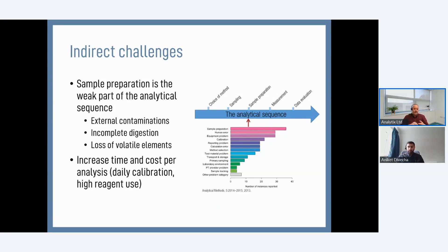The sample preparation step is really the weak part of this sequence. Anyone who's prepared samples this way knows you can have issues with hot plates, hot blocks, and microwaves — if the sample is open to the environment or you have a venting issue, mercury's low boiling point and volatility means it is the first element that will disappear during this step. There are so many areas where you can go wrong — human error in weighing, calibration, selecting the wrong methods — all feeding into problems with the indirect platform. Introducing sample preparation increases both time and cost per analysis.